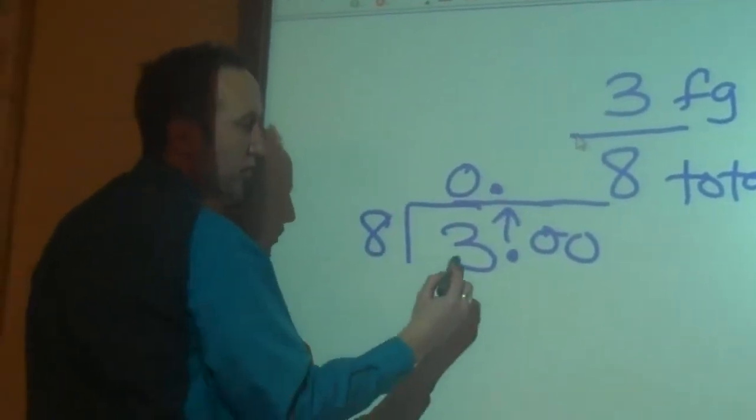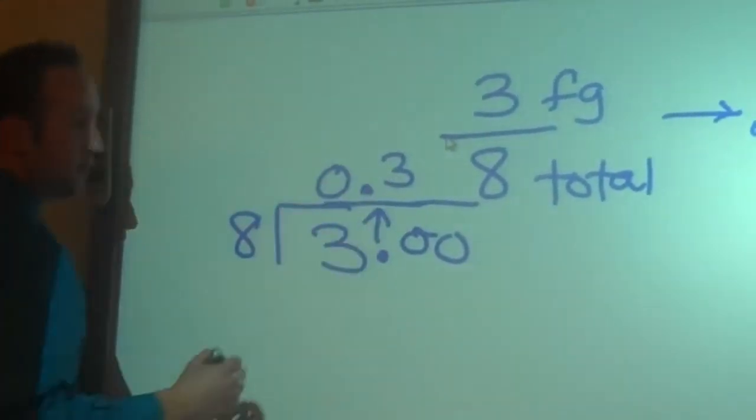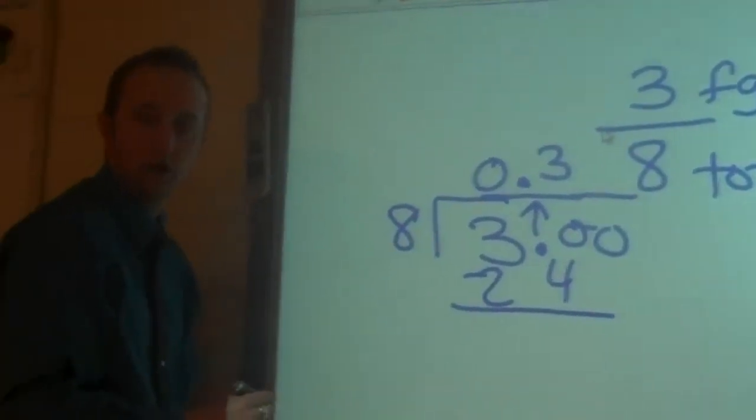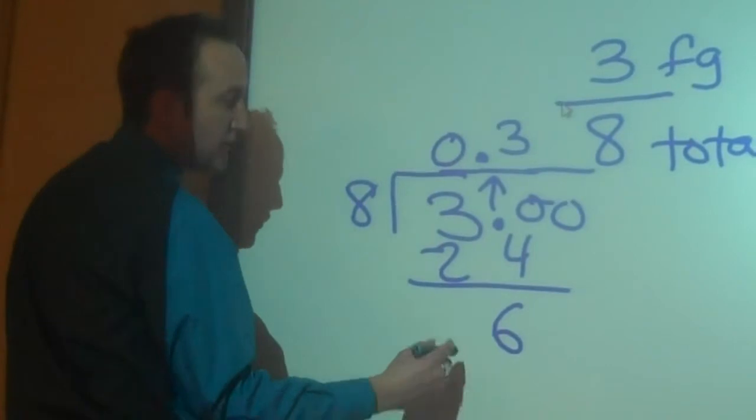How many times can eight go into thirty? Three. Three times. And eight times three, Will, is? Twenty-four. Twenty-four. Will, what's thirty minus twenty-four? Six. Six. We're not done yet.